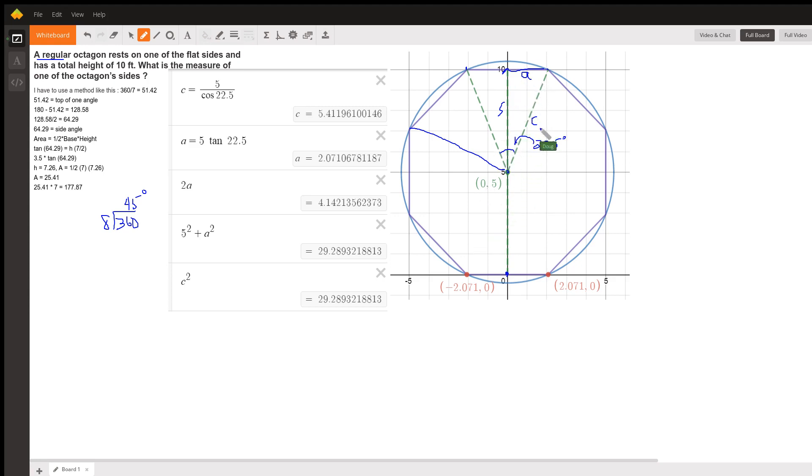a will be 5 times the tangent of 22.5, because this angle is 22.5. The tangent of 22.5 will equal a over 5, so 5 times tangent of 22.5 gives me the length.